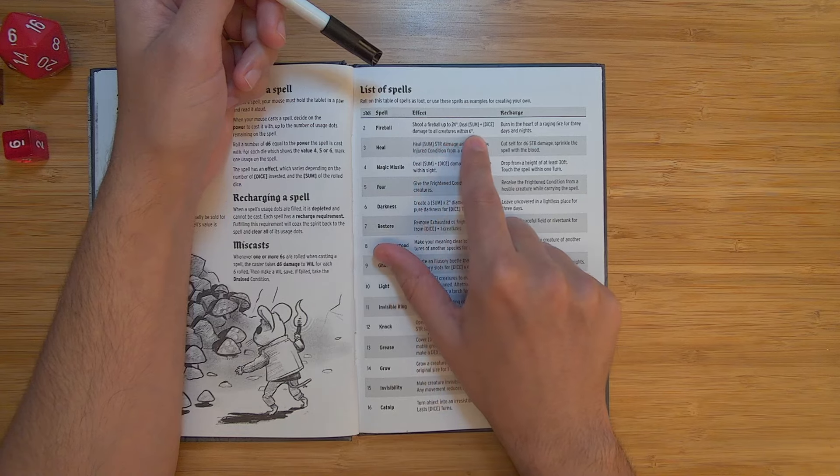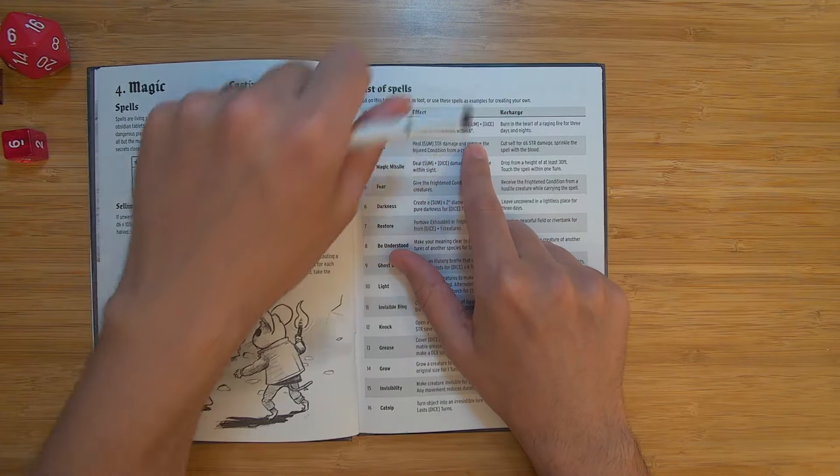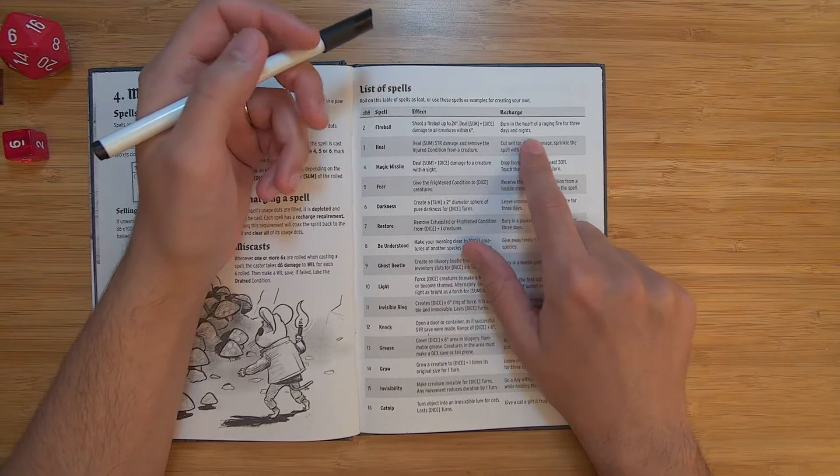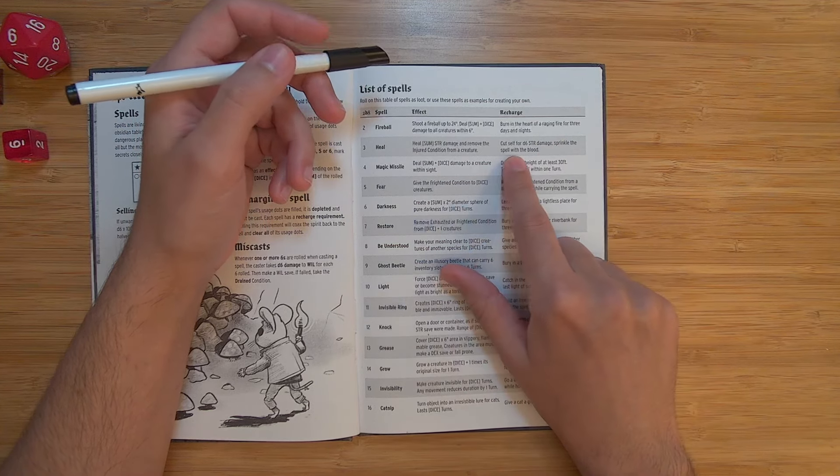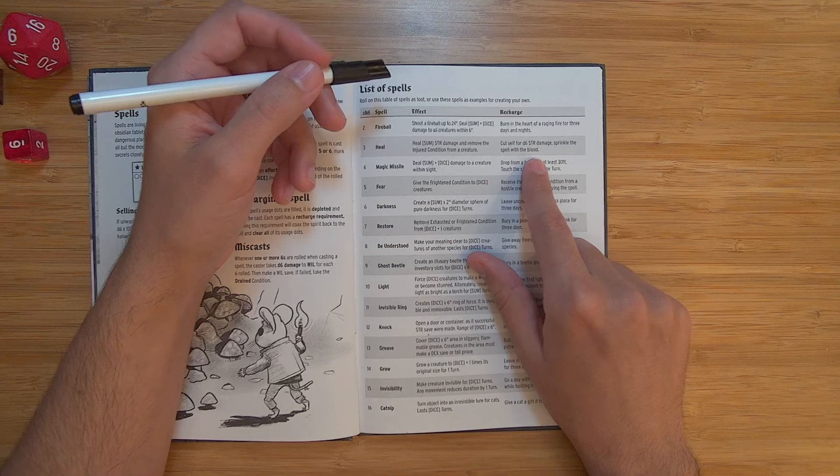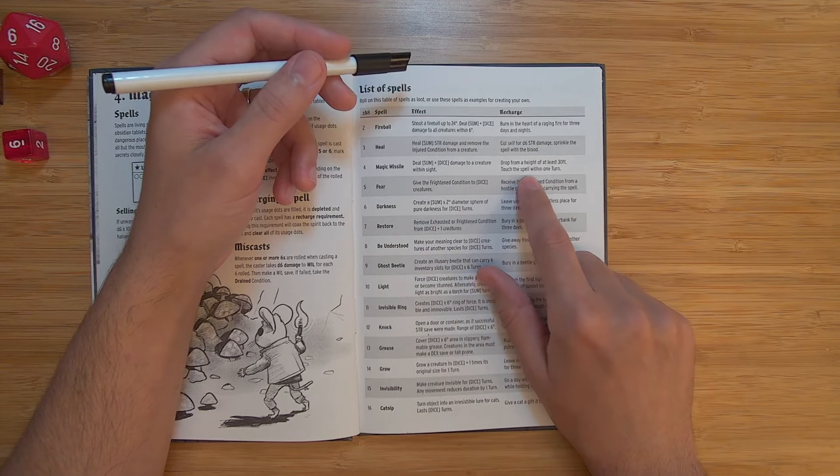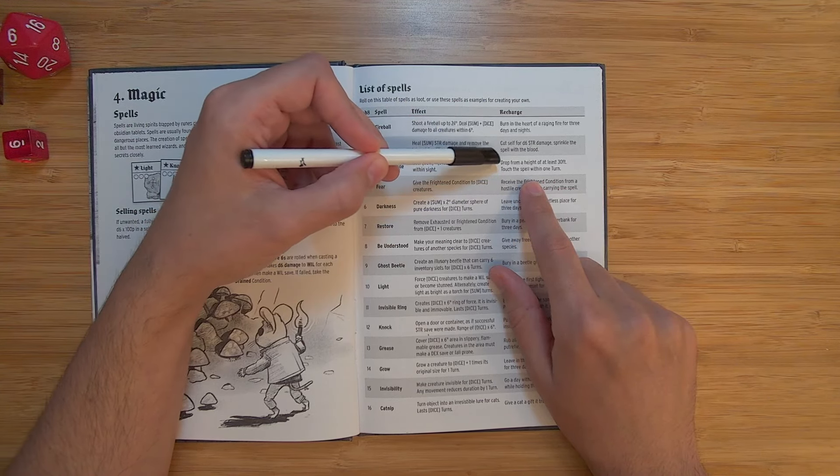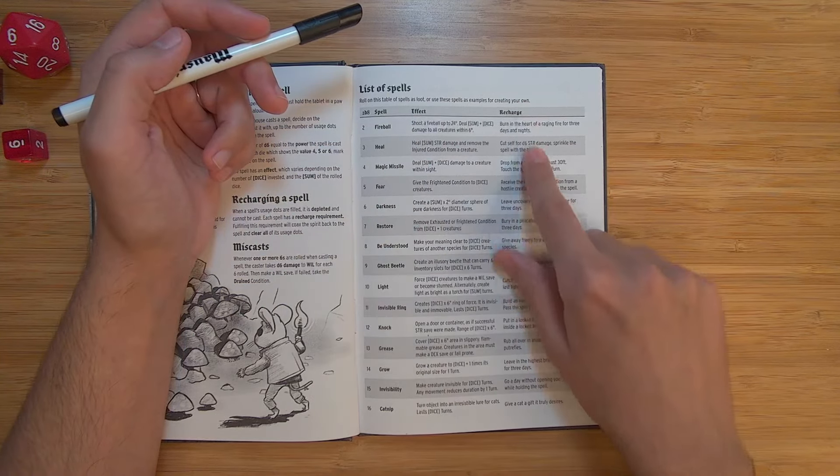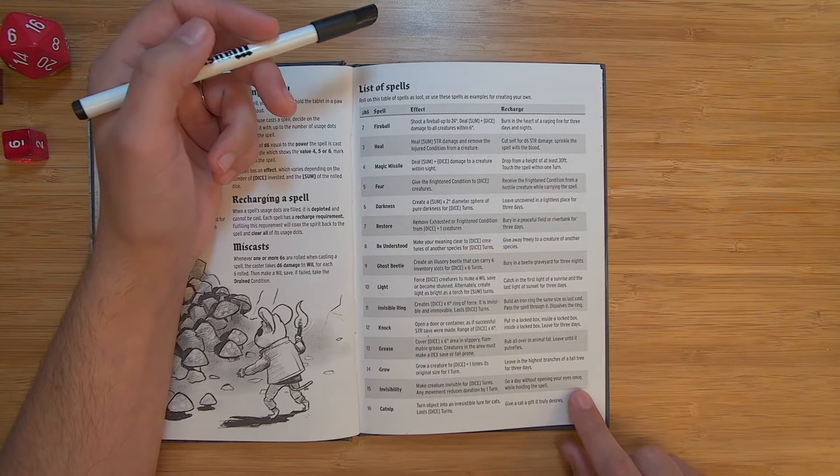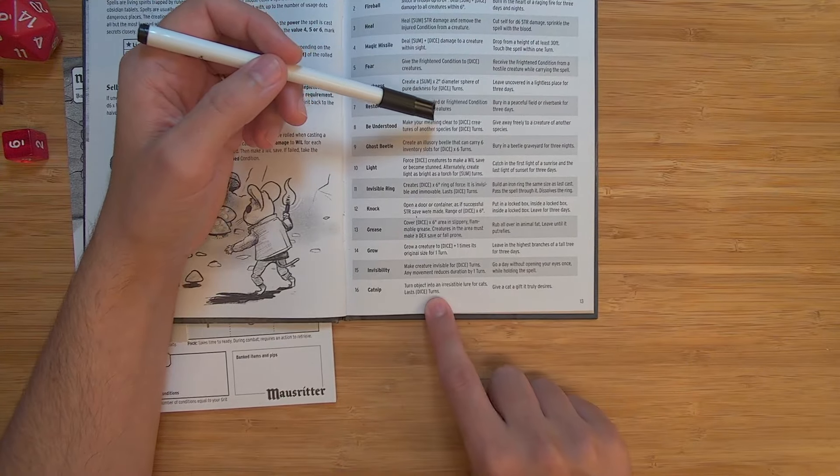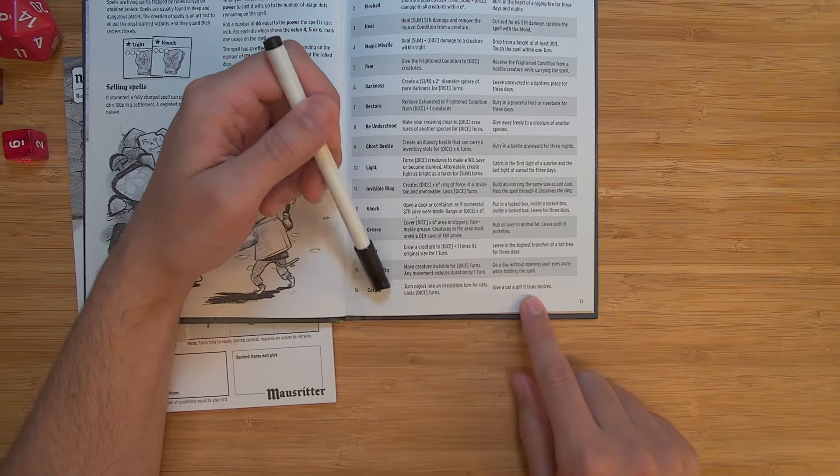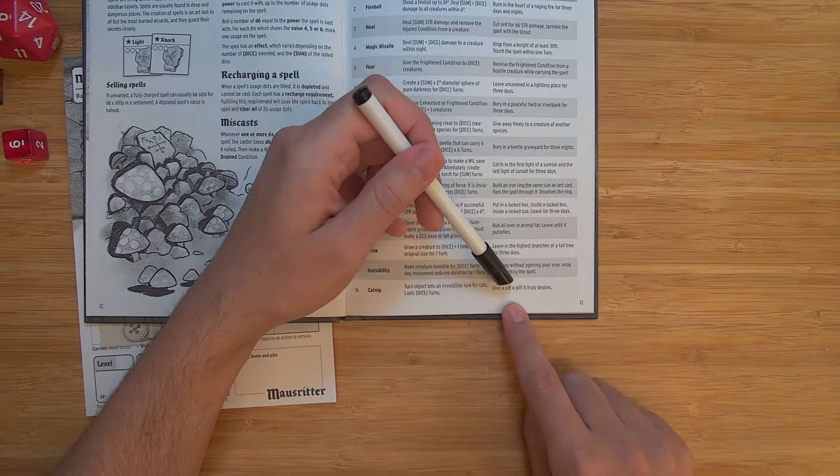So fireball. Shoot a fireball up to 24 inches, and then you deal some amount of damage to creatures within six inches, which is a really cool way to do it. I love how it's all inches because you're mice anyway, and that makes sense. But look at this recharge. Burn in the heart of a raging fire for three days and nights. Heal. Cut yourself for D6 strength damage and sprinkle the spell with the blood. Magic missile. Drop from a height of at least 30 feet and then touch the spell within one turn. How are you going to do that? How are you going to do that safely without dying? So each spell is sort of its own quest to unlock again. Catnip. Turn an object into an irresistible lure for cats. So this is like the dragon ability. This is like the biggest, baddest creature you can fight. Give a cat a gift it truly desires. So Nimble has taken a big inspiration from Mouse Ritter with their list of spells and how spells work.